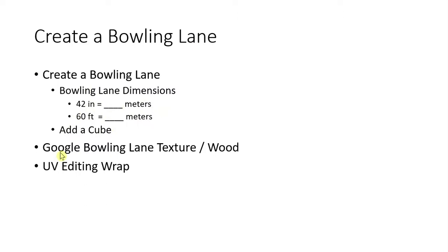We're also going to add a wooden texture so you can see how easy it is to find a texture on Google and apply it to your meshes. I'll also teach you quickly how UV unwrapping works, which means you can lay out your object onto your texture and decide where you want that texture to fall on your object's surface.